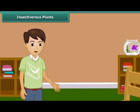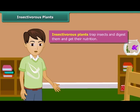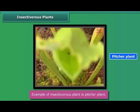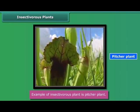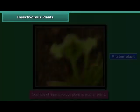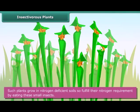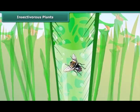The next category is insectivorous plants. There are a few plants which can trap insects and digest them to get nutrition. For example, pitcher plants. Actually, these plants can synthesize their own food by photosynthesis, but they grow in nitrogen-deficient soils. So such plants fulfill their nitrogen requirement by eating small insects, and hence are called insectivorous plants.